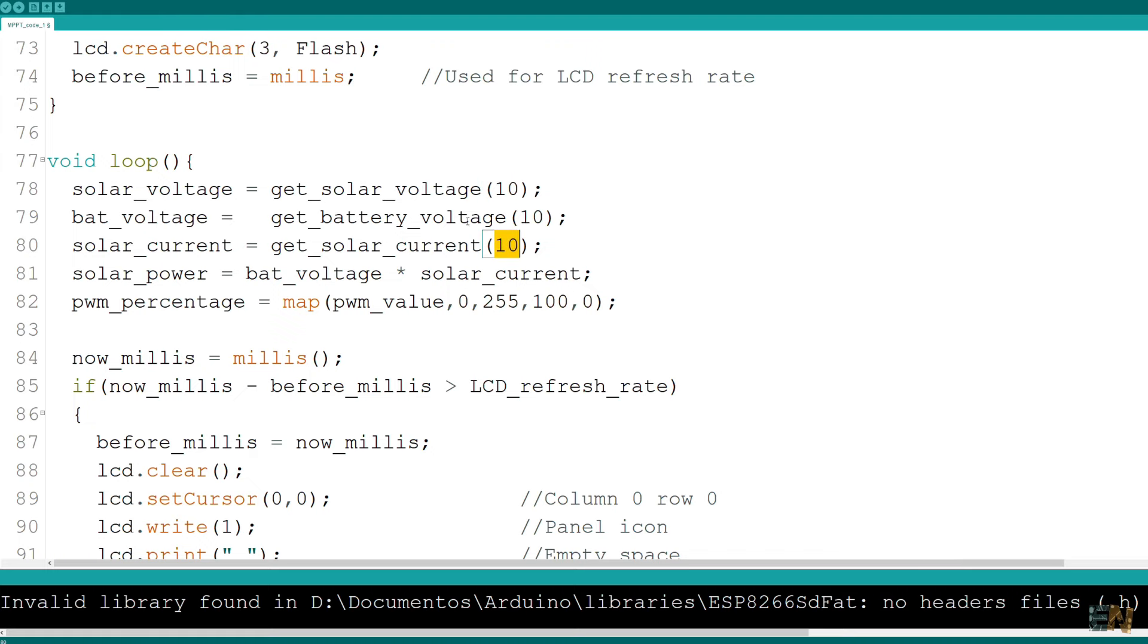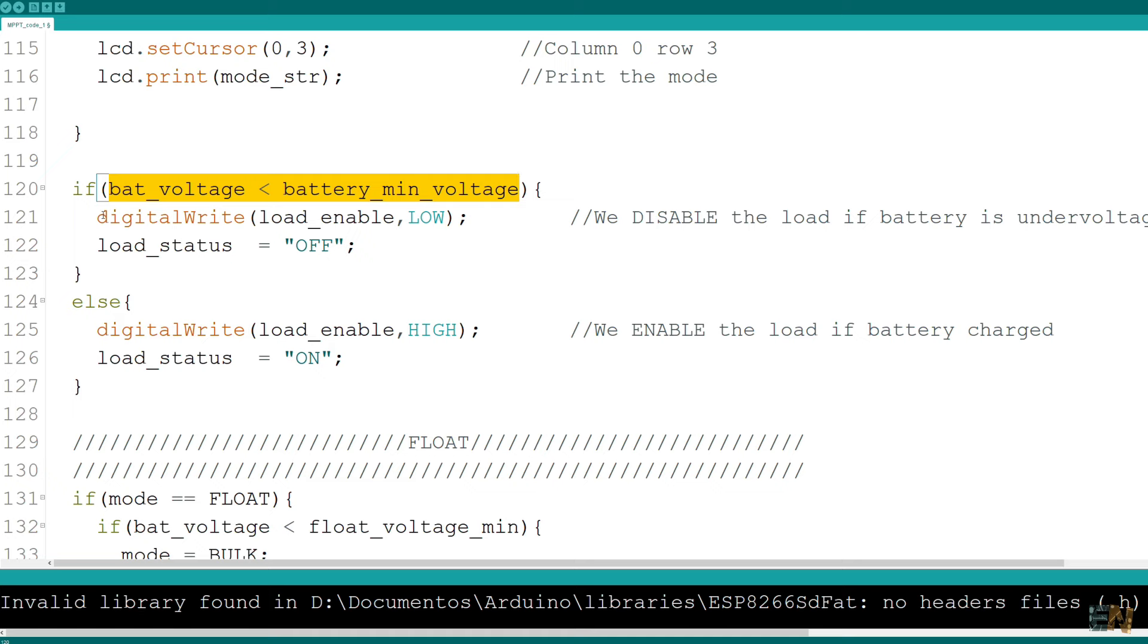For safety, if the battery voltage is below a certain value, we disable the load output with the relay so we protect the battery for undervoltage.